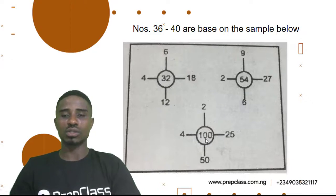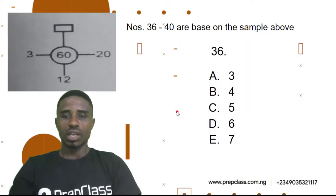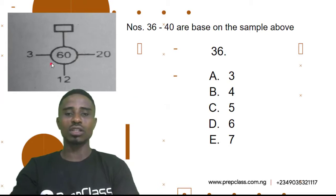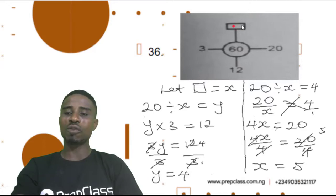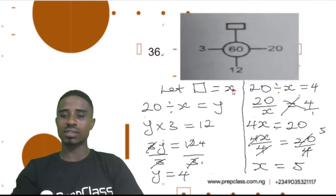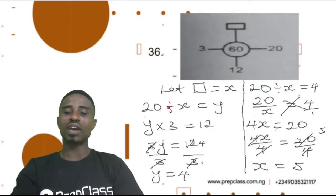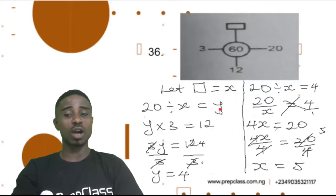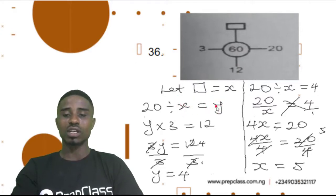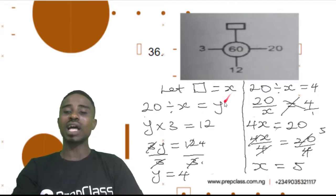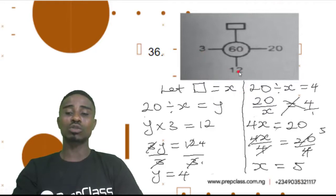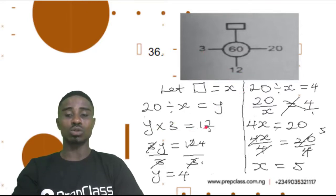Now, question 36. Here is our question. Let's see how best to get the answer. We need to find out the answer that should be there. Let's assume that answer to be x. So, 20 divided by x will give us an answer we also don't know. Because we don't know x, we don't know the answer it will give us. We also know that that answer, which we assume to be y, times 3 will give us 12. That's why we said y times 3 equals 12.